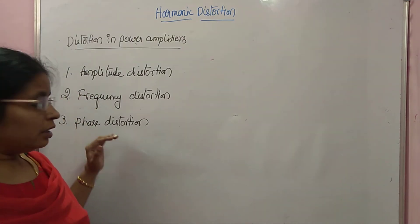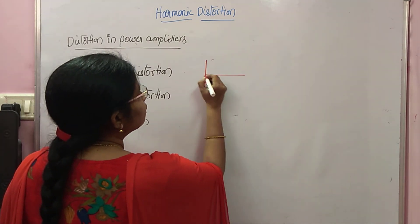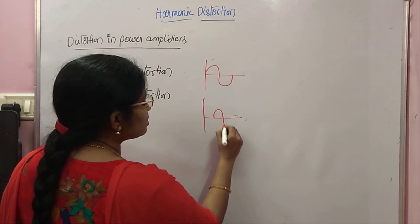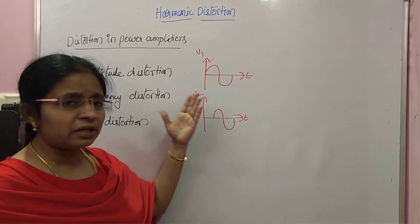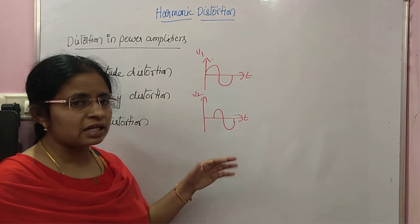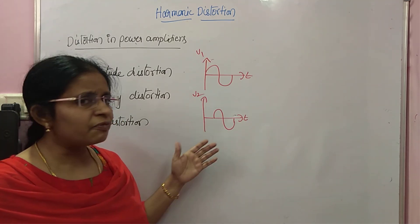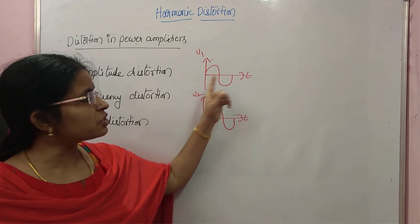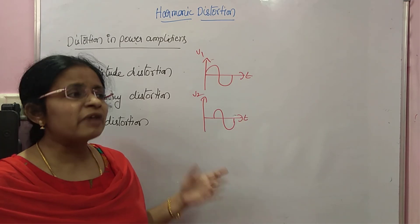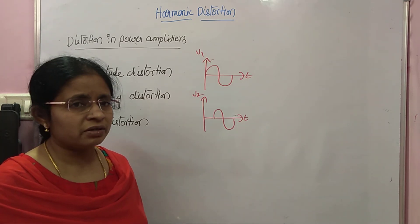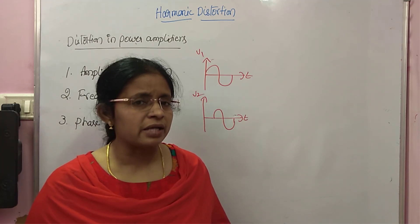Starting with phase distortion: consider two signals, D1 and D2. These are voice signals heard from a loudspeaker. Can you observe any difference while listening? We can't — because we can see the phase difference but we can't hear it. The information carried by both signals is the same; one just has some lagging. By listening, we hear the same information. So as phase distortion is not detectable by the human ear, we can ignore phase distortion in the case of power amplifiers.